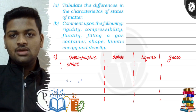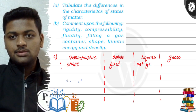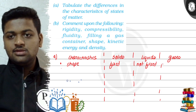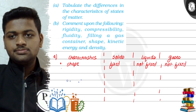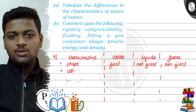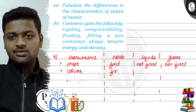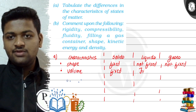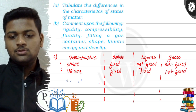When we talk about shape — in solids, the shape is fixed. In liquids, it is not fixed. And in gas, it is not fixed. Now second is volume. If we talk about volume, volume in solids is fixed. In liquids, volume is fixed. And in gases, it is again not fixed.